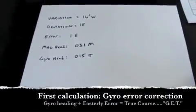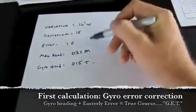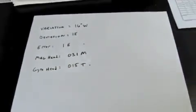So the first calculation is to calculate the true course, which is your gyro heading plus your easterly error is your true course. Now if it was westerly, you would need to subtract.